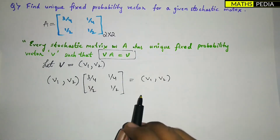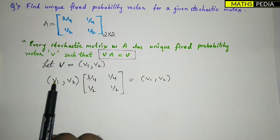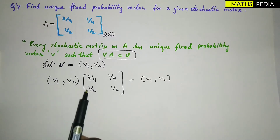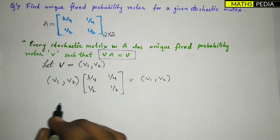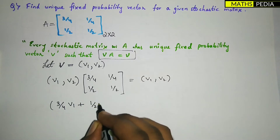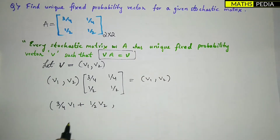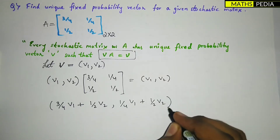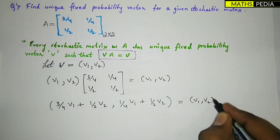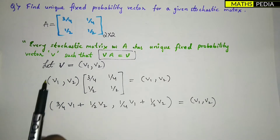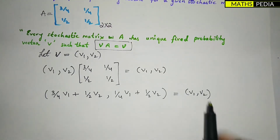Now multiply — I hope you know matrix multiplication. You multiply (V1, V2) by the matrix. What you have to do is V1 times the first column entry plus V2 times the second column entry. So it becomes: (3/4)V1 + (1/2)V2, comma, (1/4)V1 + (1/2)V2, which is equal to (V1, V2). After multiplying, put the comma between the two resulting components.